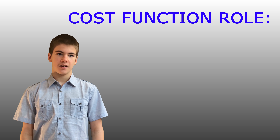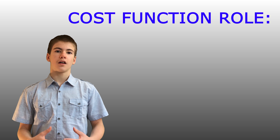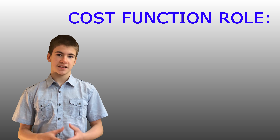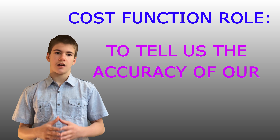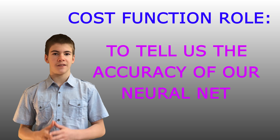In order to make our neural net more accurate, we must first calculate how accurate, or at this point I should probably say how inaccurate, our neural net is. We do this by creating a cost function. The role of the cost function is to tell us the accuracy of our neural net, of course, with our current weight values.